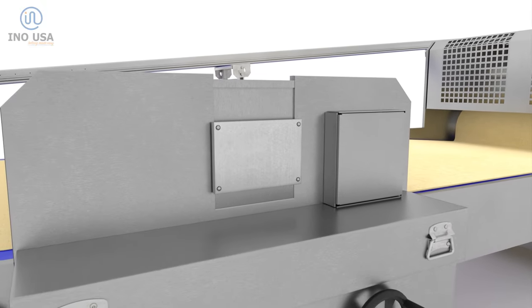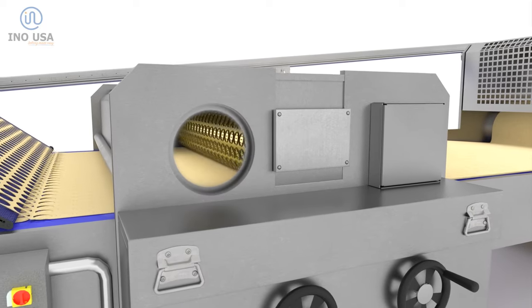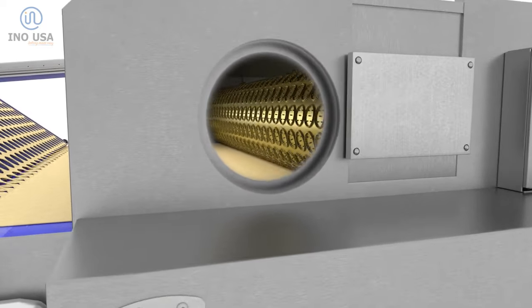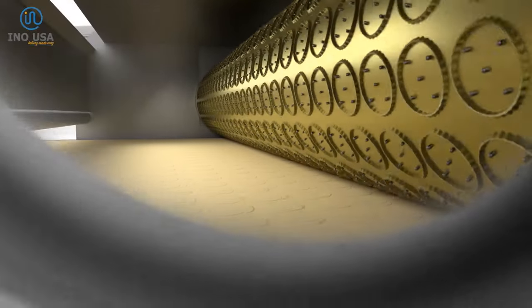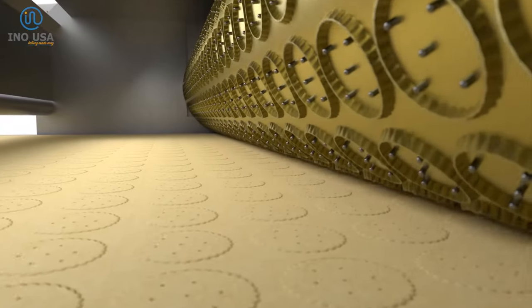Once the sheet has the desired thickness, it goes into a cutting conveyor that passes through a rotary cutter unit. The rotary cutter is used to emboss and cut the dough into the final cracker shapes.